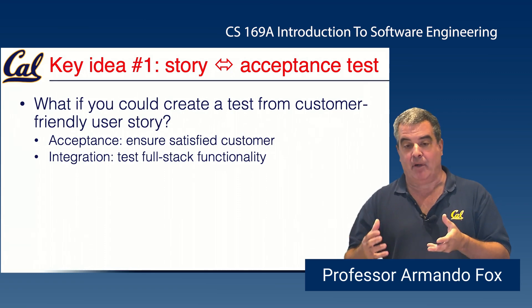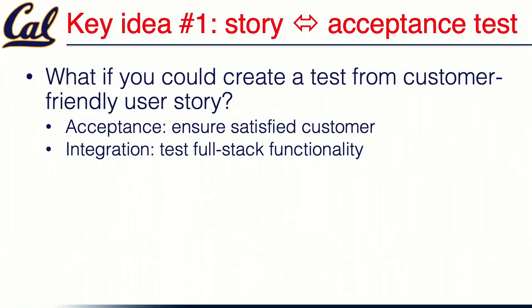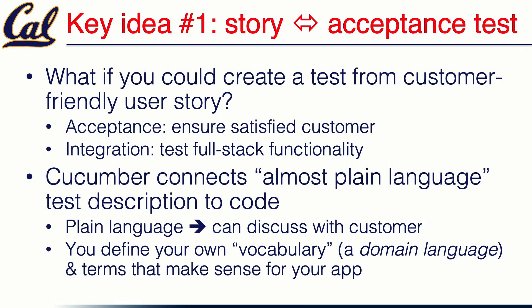Running this test against your real app also gives you an integration test, verifying the app is behaving correctly. Cucumber connects an almost plain language description of a test to code that actually makes that test happen. Because the tests are written in close to plain language — not unconstrained, but much closer to plain language than to code — a customer could actually read a Cucumber test and pretty much understand what is supposed to happen, and yet it is also an actual runnable test.